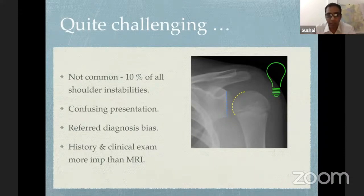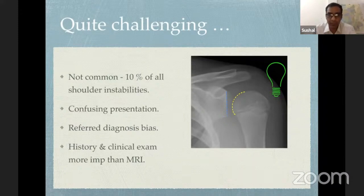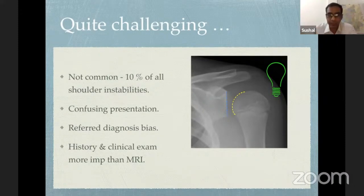History and clinical examination is more important than MRI findings here. To diagnose a good posterior labral tear or a Kim lesion, you need a good 3-Tesla MRI, which probably might not be accessible everywhere. Also, the radiologist does not have the liberty of clinically examining and looking for signs of posterior instability. So your history and clinical examination becomes very important.